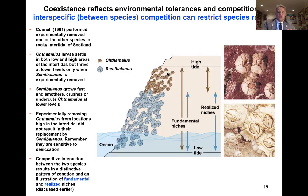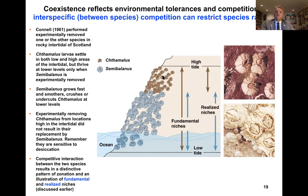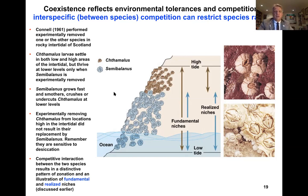Experimentally removing Chthamalus from locations high in the intertidal did not result in replacement by Semibalanus — remember, that species is sensitive to desiccation. The conclusion was that competitive interaction between the two species results in a distinctive pattern of zonation. Chthamalus has a fundamental niche that can occupy the entire intertidal; however, it has a realized niche restricted to the upper intertidal because of competition with Semibalanus. Semibalanus' fundamental niche closely matches its realized niche because it cannot occupy the upper intertidal due to desiccation sensitivity.